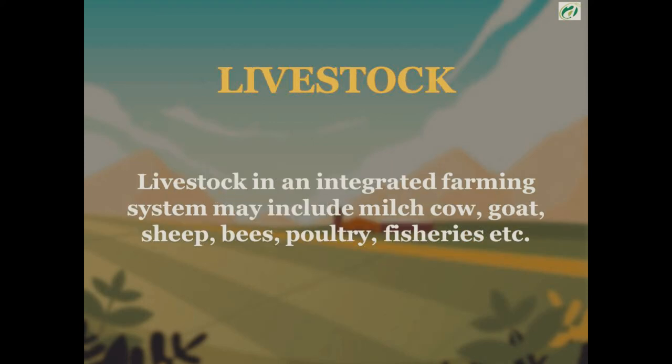The livestock sector in an integrated farming system can include milch cows, which are raised for milk production — essentially a dairy system. It can also include goats, sheep, bees, poultry, and fisheries. These can all be part of the livestock component of an integrated farming system.